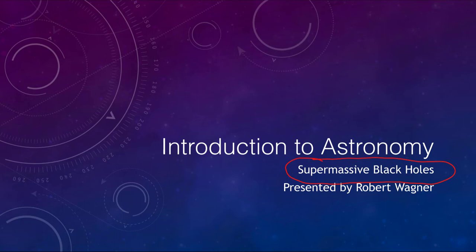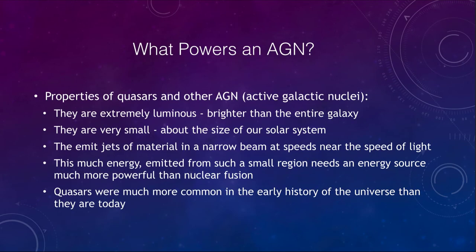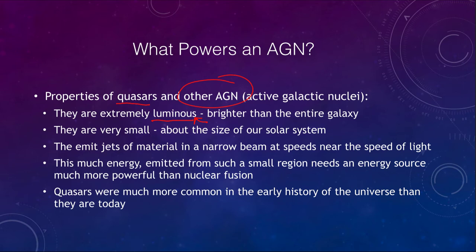To review some of the properties of quasars and other AGNs, or active galactic nuclei: first of all, we know that they are extremely luminous — brighter than an entire galaxy. Luminous means not only visible light, but also other forms of electromagnetic radiation. We know that they are very small, about the size of our solar system, so they have to be extremely compact.